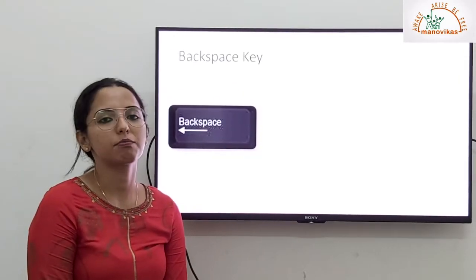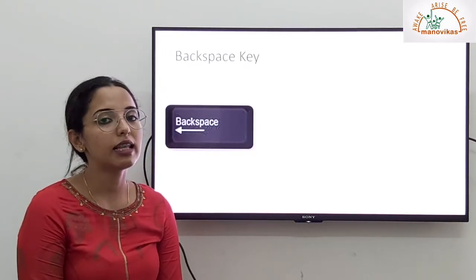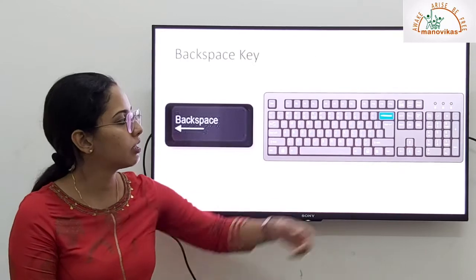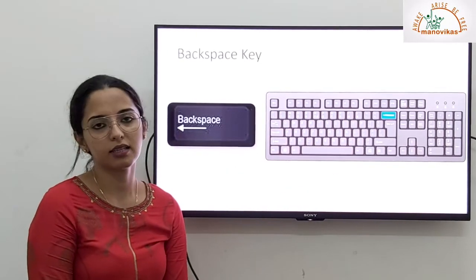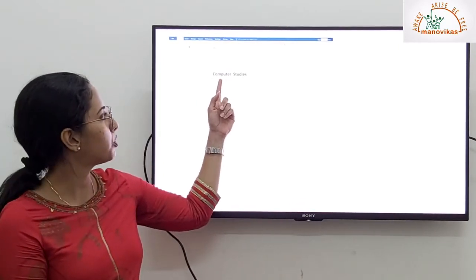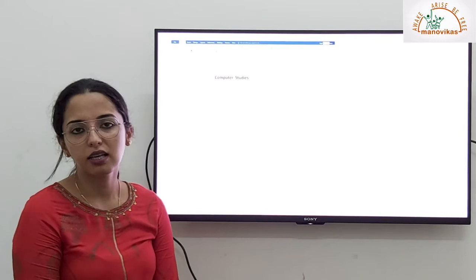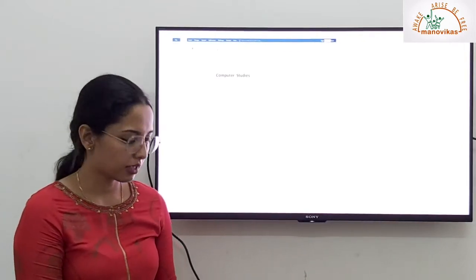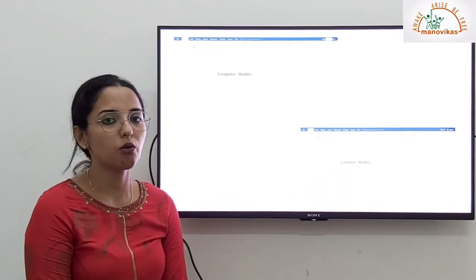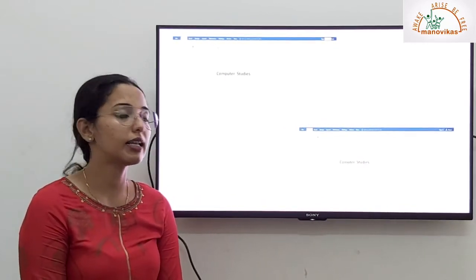Then we have a backspace key. A backspace key is used to erase text on the left of the cursor. A backspace key is located just above the enter key. Now this is a cursor. The line you can see in between the words is a cursor. I want to erase the letter P. When I press backspace, what will happen is the letter P will be erased. So this is how backspace is used. It erases letters towards the left of the cursor.